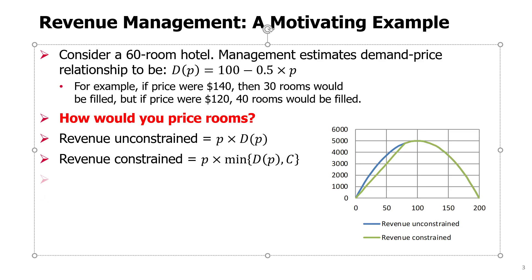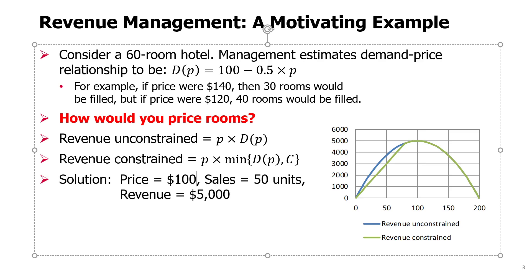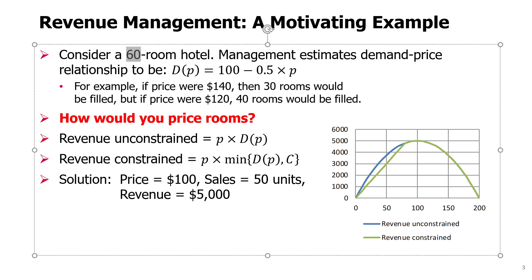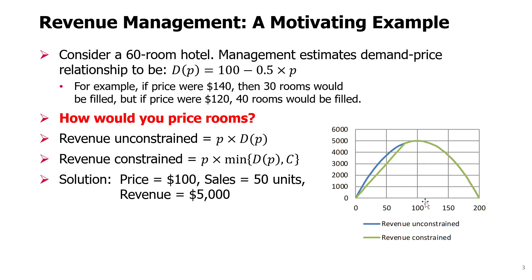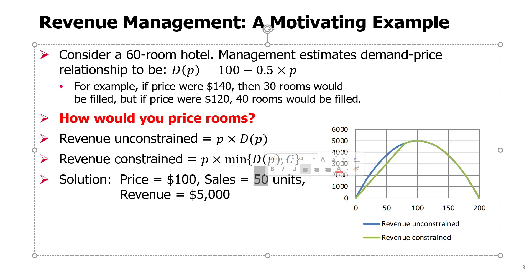If we maximize revenue, you can see on this chart that the maximum is achieved at a price of exactly $100. At that price, the demand will be 50. We have more than 50 rooms, so we can sell 50 and achieve maximum revenue of $5,000. Notice we do not use all the capacity — just 50 out of 60 rooms — but this is optimal from the perspective of maximizing revenue.